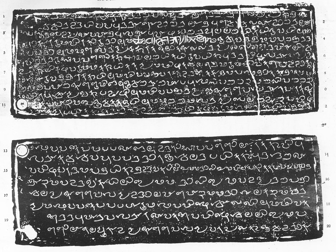The Southern Grantha script, formerly used for writing Sanskrit in South India, evolved into the modern Malayalam script in Kerala. Derived from the Tamil Brahmi script, the Vatteluttu was developed in southern India and was extensively used for writing various forms of Tamil and Malayalam.